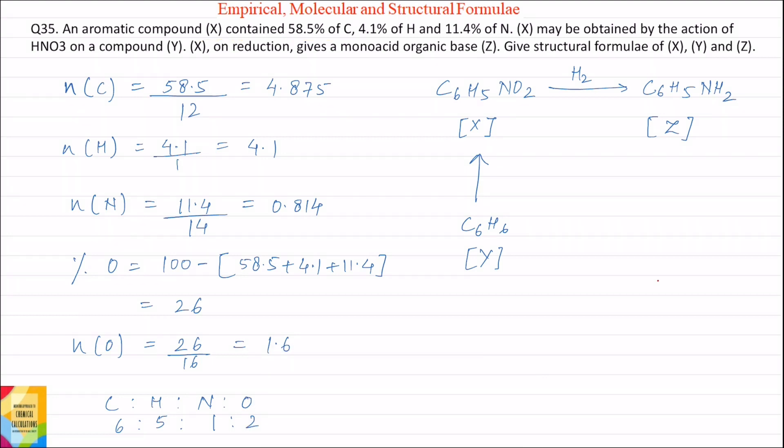Question 35. An aromatic compound X contained 58.5% of carbon, 4.1% of hydrogen and 11.4% of nitrogen.